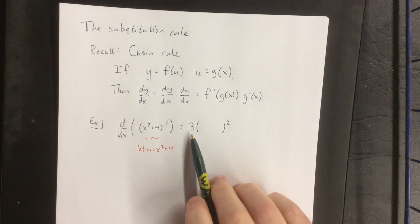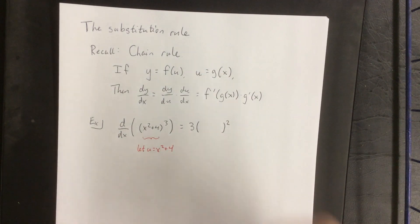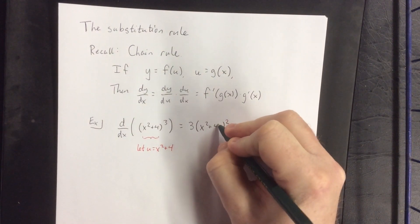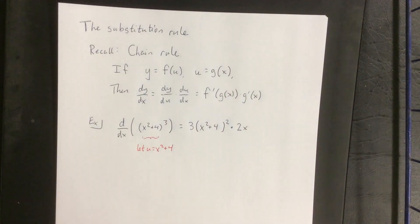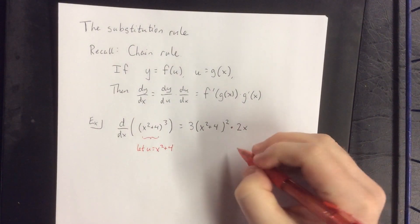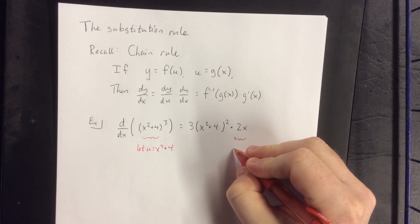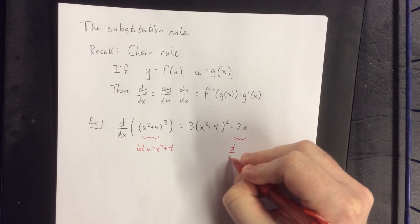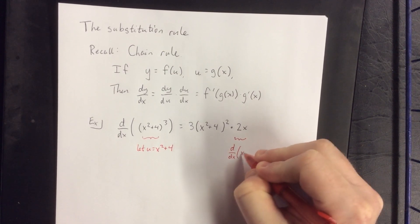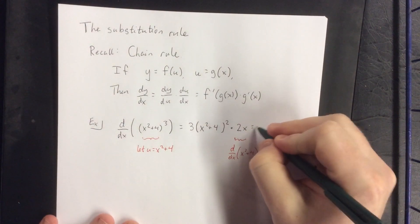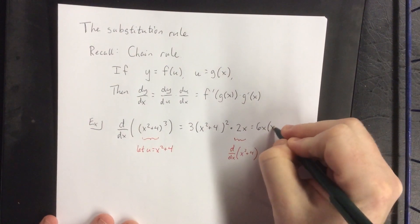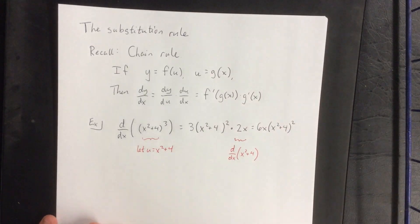According to the power rule, that would be three times whatever that quantity is squared. Eventually we got to the point where we could do this without actually making the substitution for u. But afterward we would be responsible for taking the derivative of the inside function with respect to x. Simplifying this with algebra, this is going to be equal to 6x times x squared plus 4, raised to the second power.